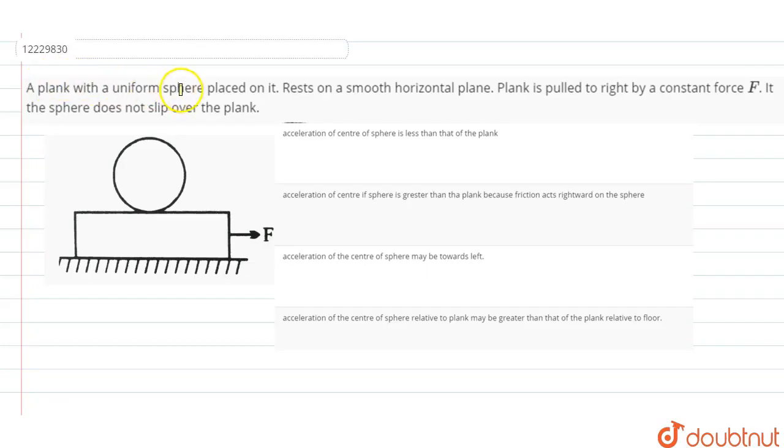So this is a plank with a uniform sphere on it, resting on a smooth surface. The plank is pulled to the right by a constant force F. If the sphere does not slip on the plank, then the sphere doesn't slip on the plank.